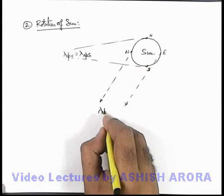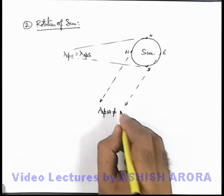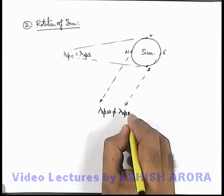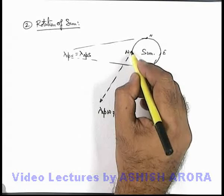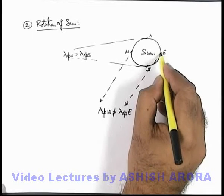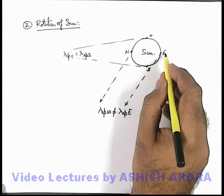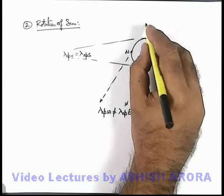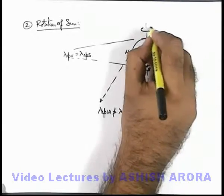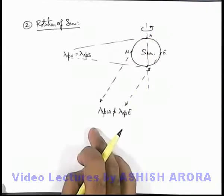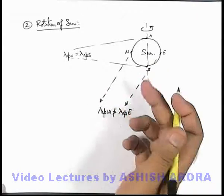It is observed that lambda apparent which is coming from the west edge is not equal to lambda apparent which is coming from the east edge. This implies that the west and east edges of the sun are not having the same speeds or are not at rest with respect to each other. This implies that the sun is rotating about the north-south axis of rotation — then only it is possible that with respect to earth the west and east edges of the sun will be having different speeds.